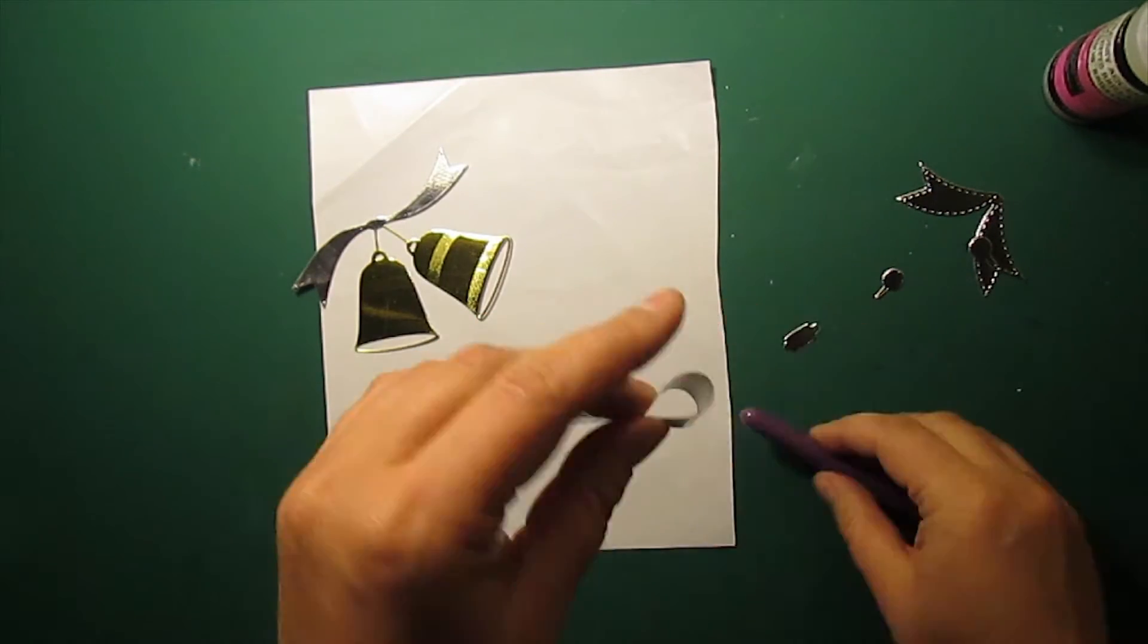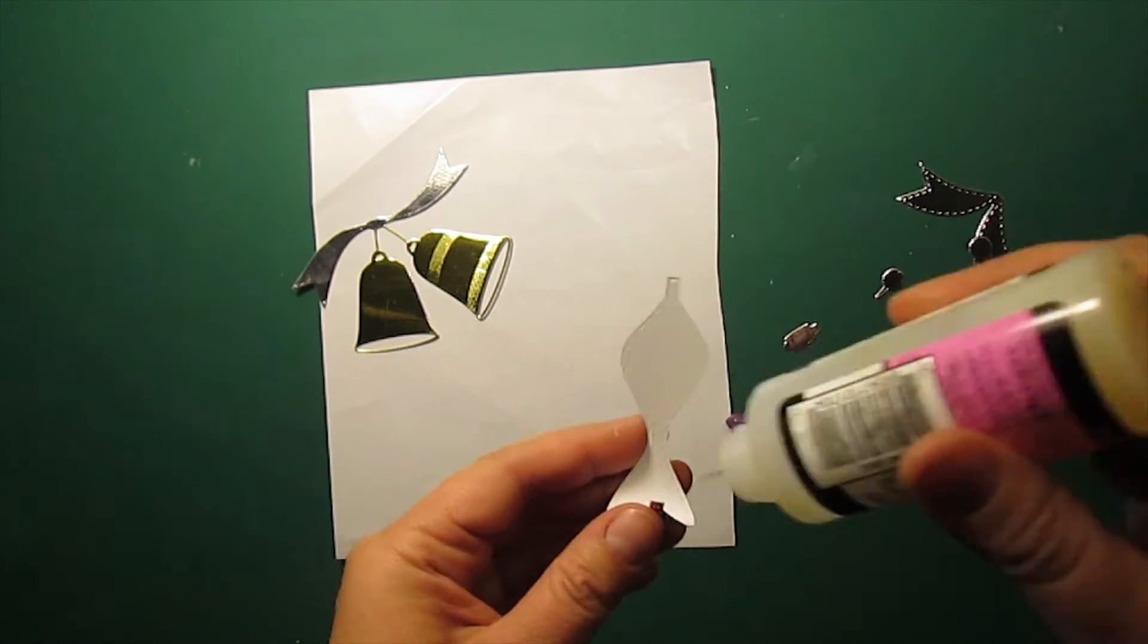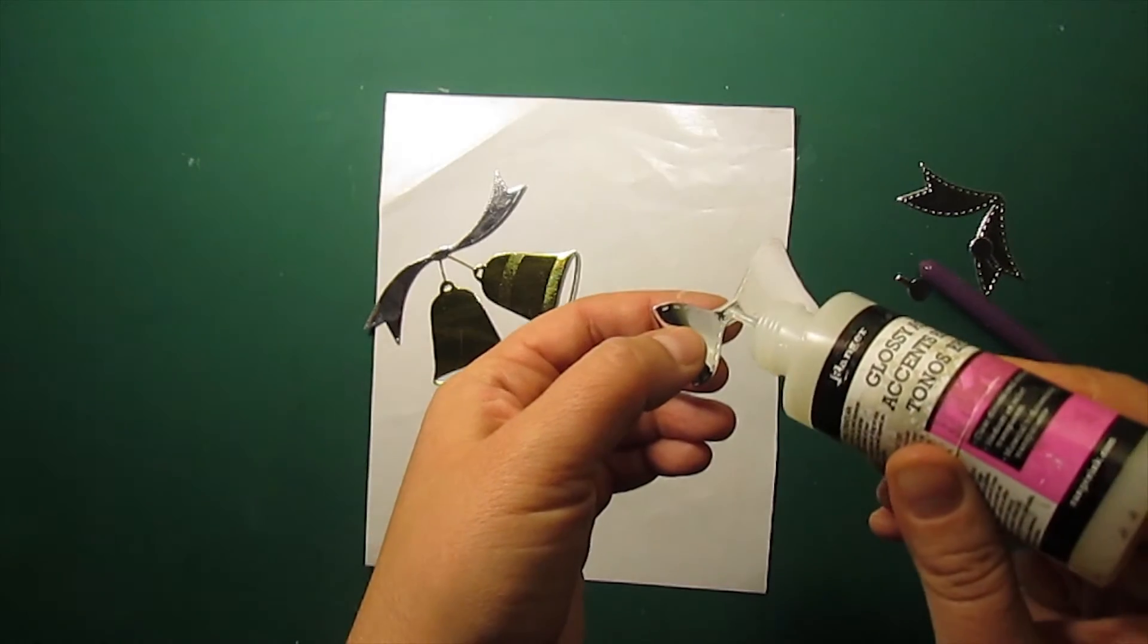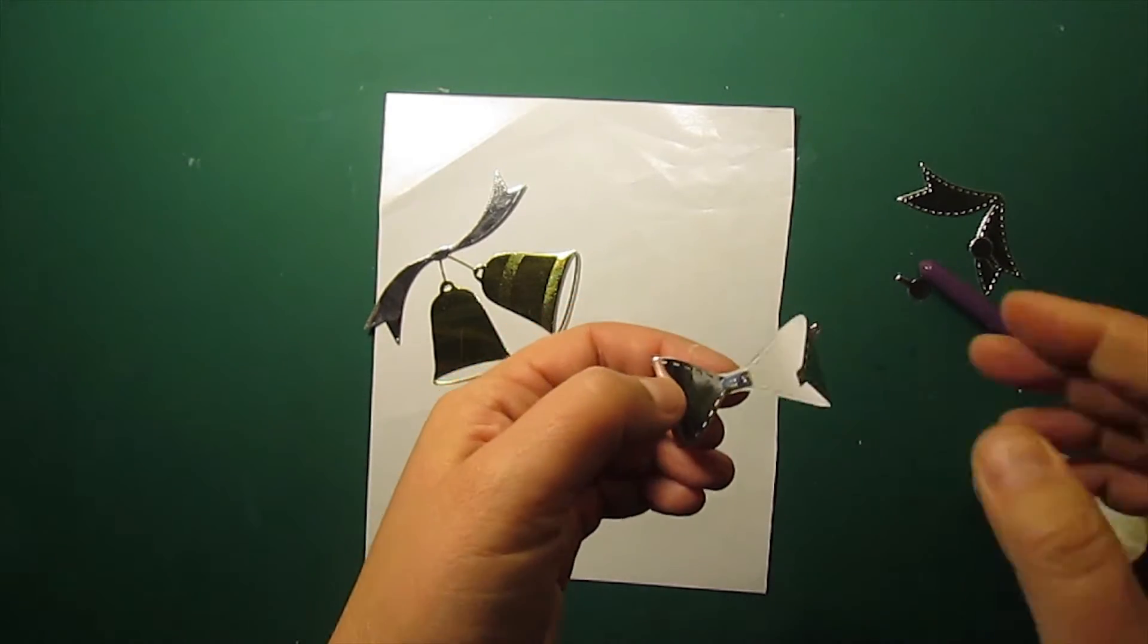Now I'm assembling the bow. I'll not be using the tails that come in a set for this particular project.